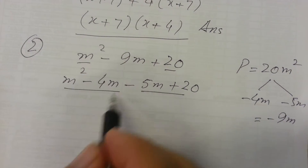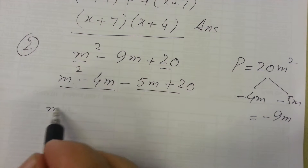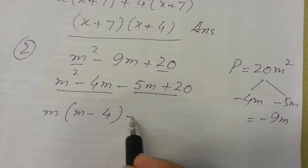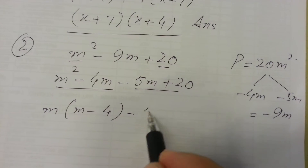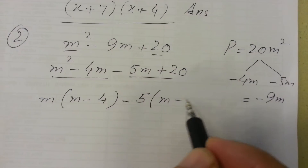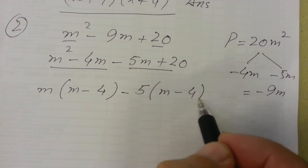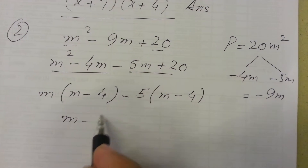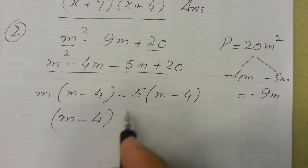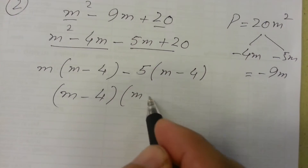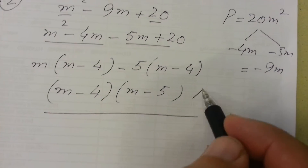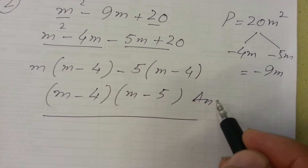Taking common: m is common in the first two terms giving m(m minus 4), and minus 5 is common in the last two terms giving minus 5(m minus 4). So (m minus 4) is again common, and the answer is (m minus 4)(m minus 5).